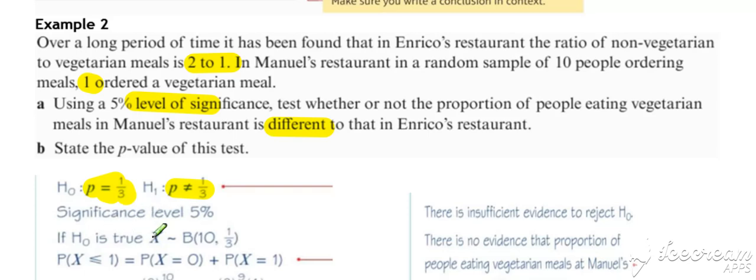And we set up our binomial. We want this time the probability of our evidence or worse. So when we are setting up our probability statements, we haven't got a direction in the alternative hypothesis to guide us this time. So what we need to do is we need to look at our binomial and look at what we would expect to get. Our expected value for that binomial would be 10 over three. We actually got one.